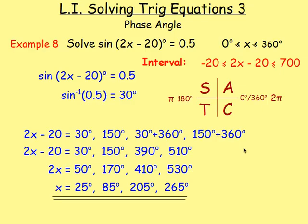Example eight introduced the phase angle. Remember, you have to alter the interval. Here we have 2x − 20, so the interval changes: double the bounds and subtract 20, giving answers between −20 and 700. You can add 360 to your answers as long as you don't go past 700, and you can also subtract 360 as long as you don't go below −20. This gives you additional answers.